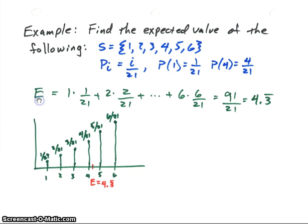So the expected value, we just again take the value that's in the sample space times its probability. So we'll start with 1. 1 times 1/21 plus 2 times 2 over 21, and we keep on going. Finally, we get down to the end, 6 times 6 over 21.